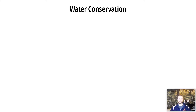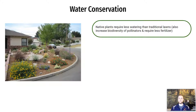Water conservation strategies also represent energy conservation, because water takes energy to both purify and pump out to houses or businesses. One really effective way to do this is removing turf or grass and replacing it with native vegetation. Native plants are uniquely adapted to the surrounding climate, so they don't need nearly as much water or fertilizer to sustain them. An additional benefit is increased biodiversity, as native plants provide shelter and food for a much greater variety of organisms than a grass or turf front yard.